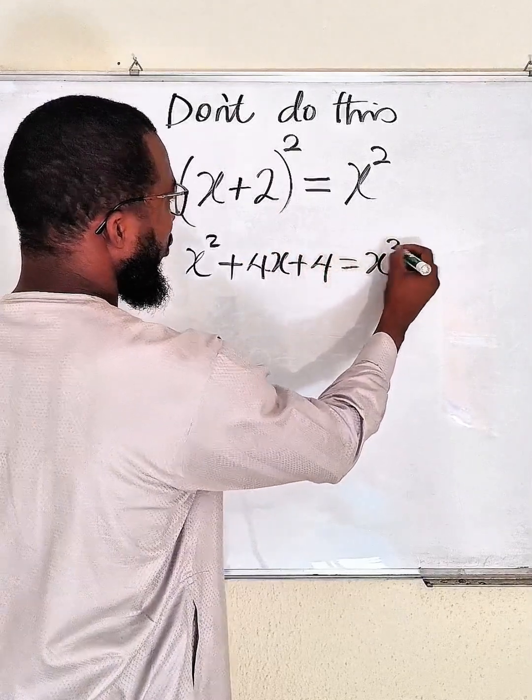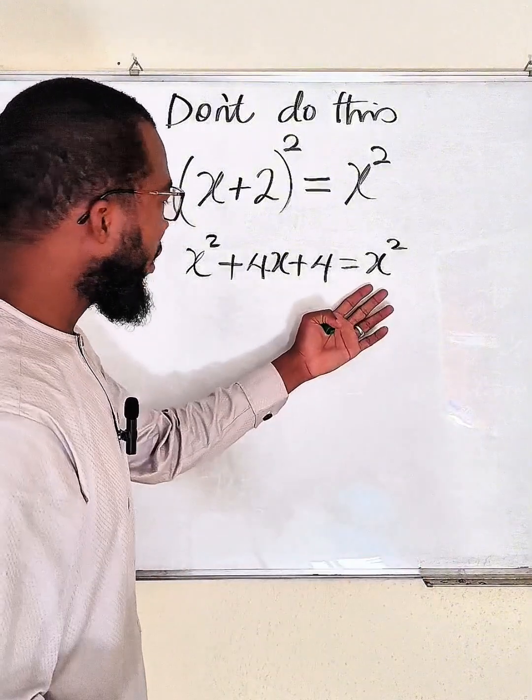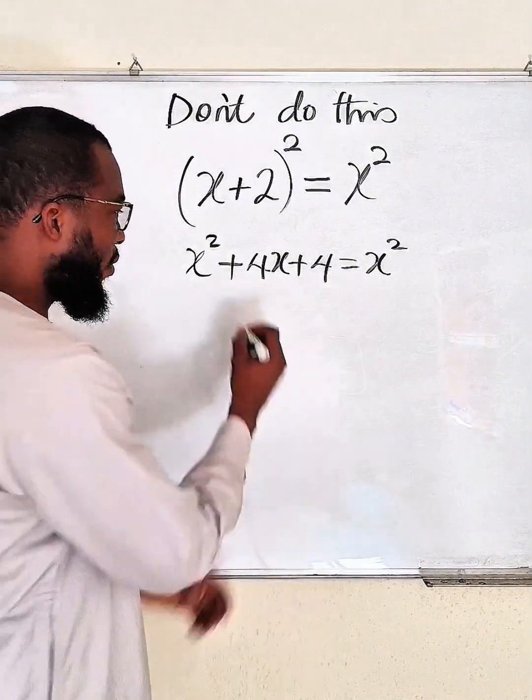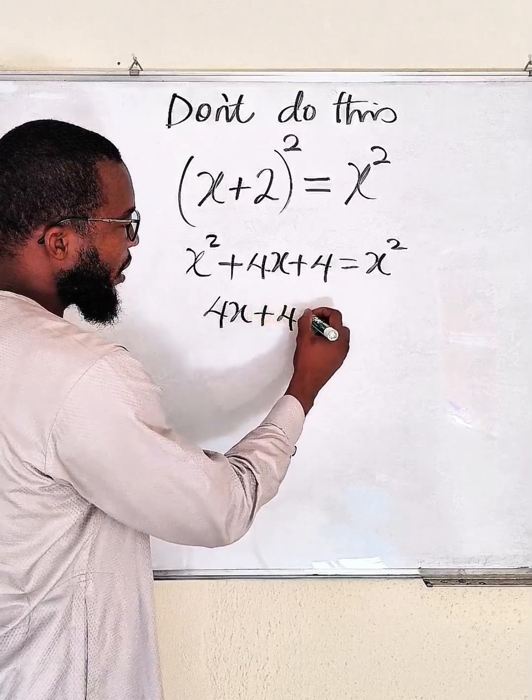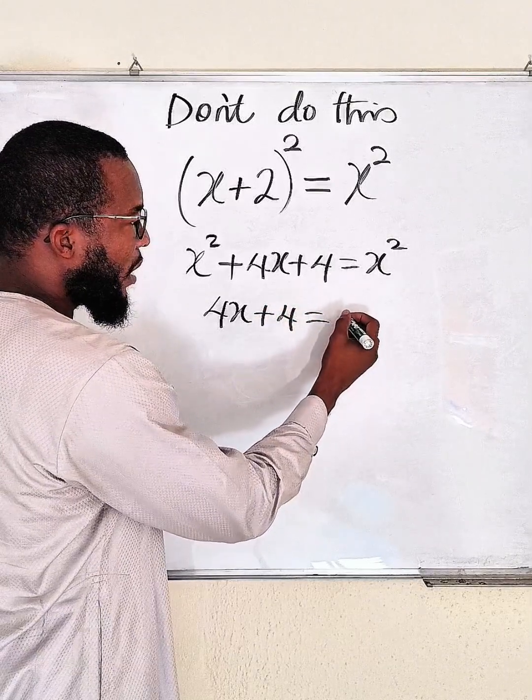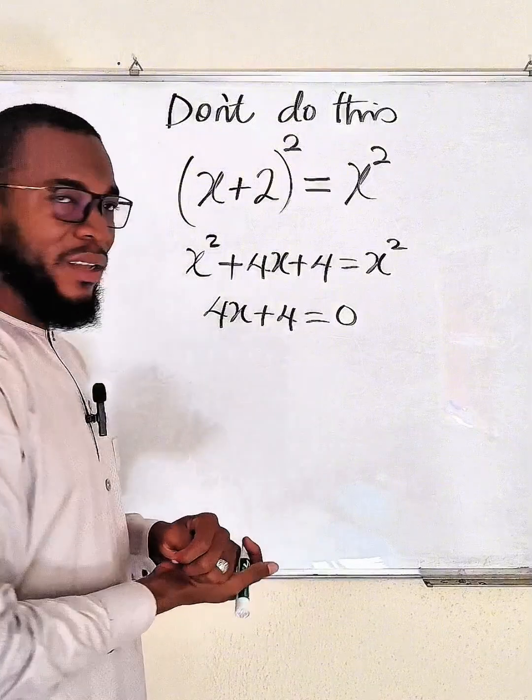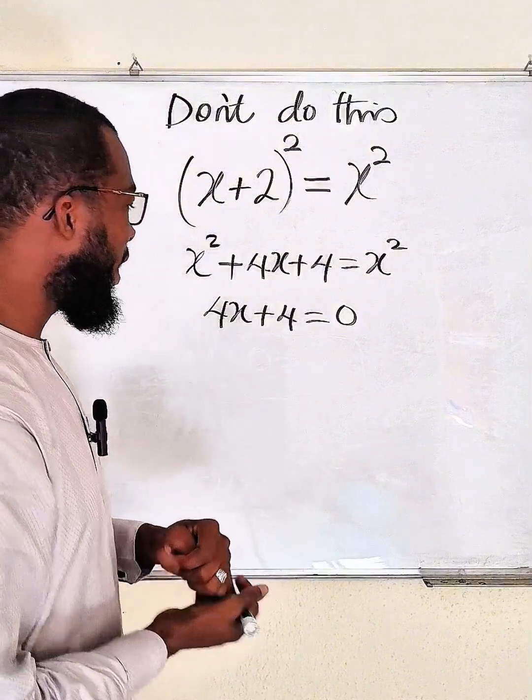This is equal to x². If you subtract x² from both sides, you have 4x plus 4 equal to 0, because we have subtracted x² from both sides.